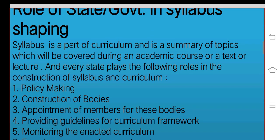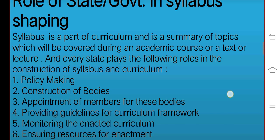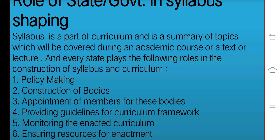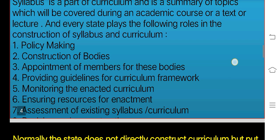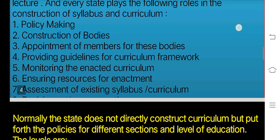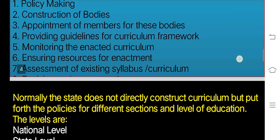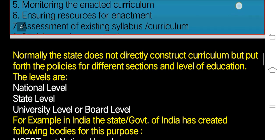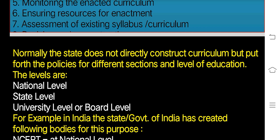Role of State Government in Shaping Syllabus: Syllabus is a part of curriculum and is a summary of topics which will be covered during an academic course or a text or lecture. Every state plays the following roles in the construction of syllabus and curriculum: policymaking, construction of bodies, appointment of members for these bodies, providing guidelines for curriculum framework, monitoring the enacted curriculum, ensuring resources for enactment, and assessment of existing syllabus and curriculum. Normally, the state does not directly construct curriculum but puts forth the policies for different sections and levels of education.